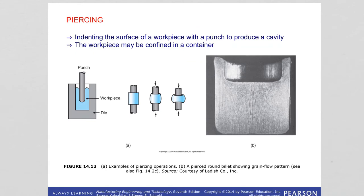Piercing is a process of indenting the surface of a workpiece with a punch to produce a cavity. The workpiece can be confined in a container or unconstrained. Piercing can also be followed by punching to produce a hole in the part. The piercing force depends on the cross-sectional area and tip geometry of the punch, the strength of the workpiece, and friction at the punch-workpiece interface. The pressure may range from three to five times the strength of the material.